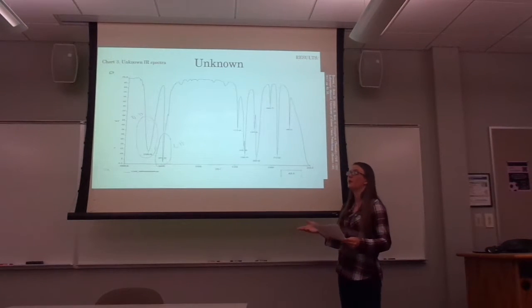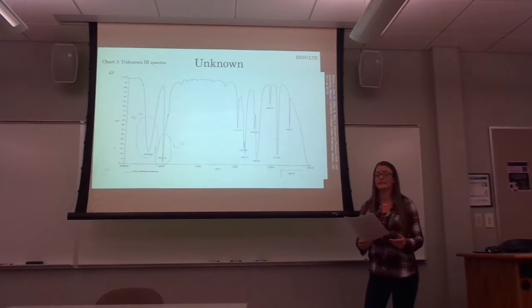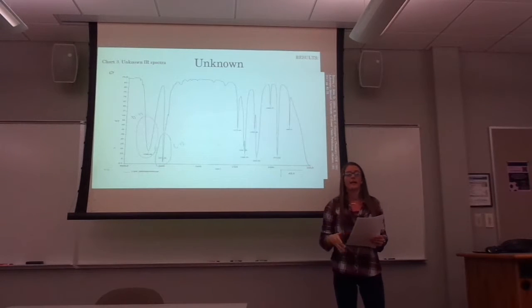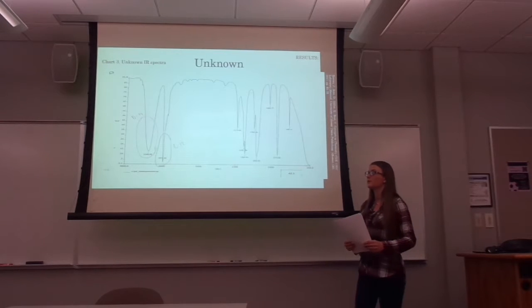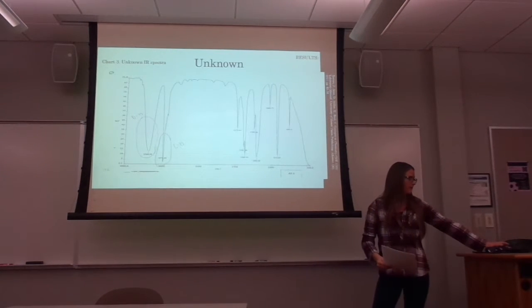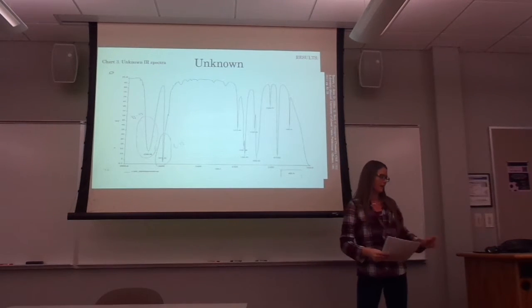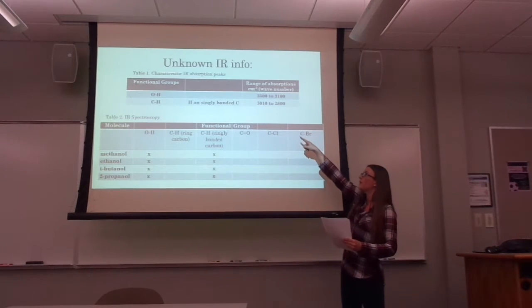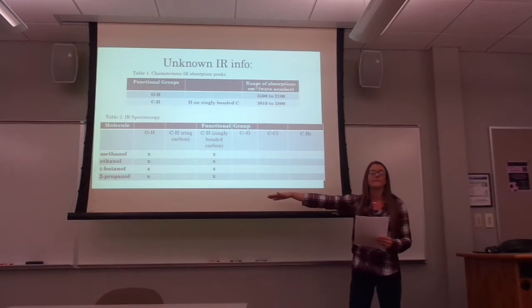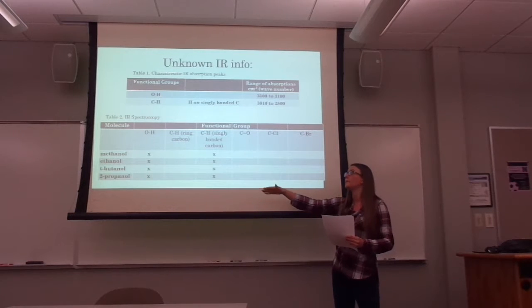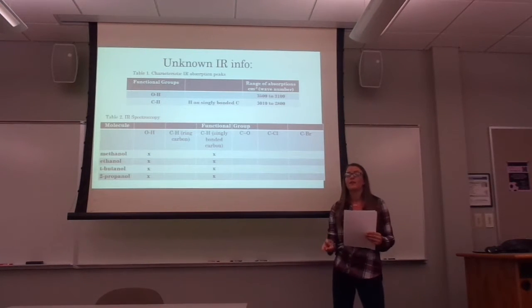For my unknown compound, the IR spectrum shows a first peak at about 3,368 wave numbers, which falls under the OH functional group range in Table 1. The second strong peak at 2,973 wave numbers falls under the CH functional group. The remaining peaks do not fall under the six functional groups we're examining, so they are not considered. This narrows our 15 possibilities down to four compounds that have both OH and CH (singly bonded carbon) functional groups: methanol, ethanol, t-butanol, and 2-propanol.